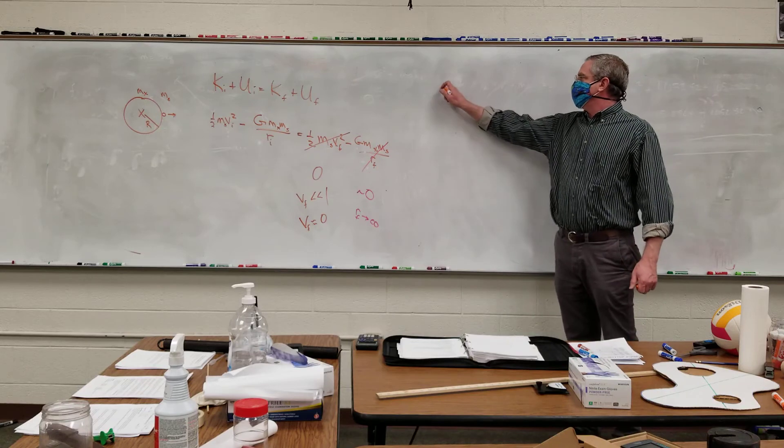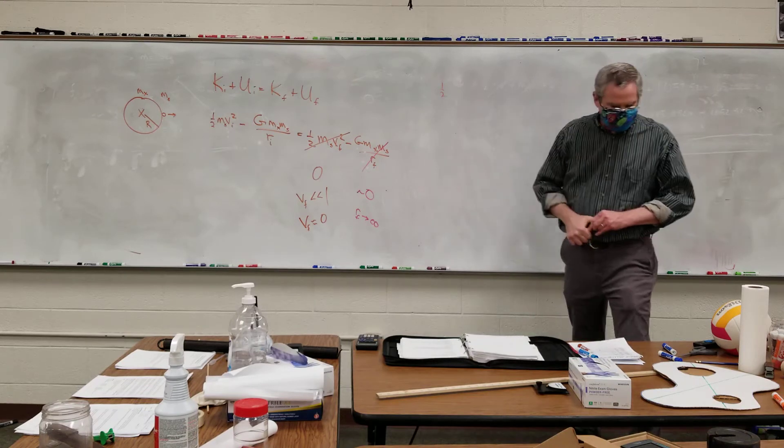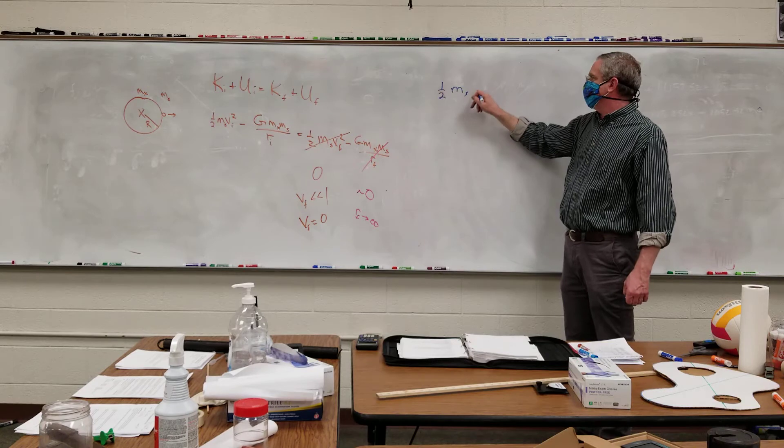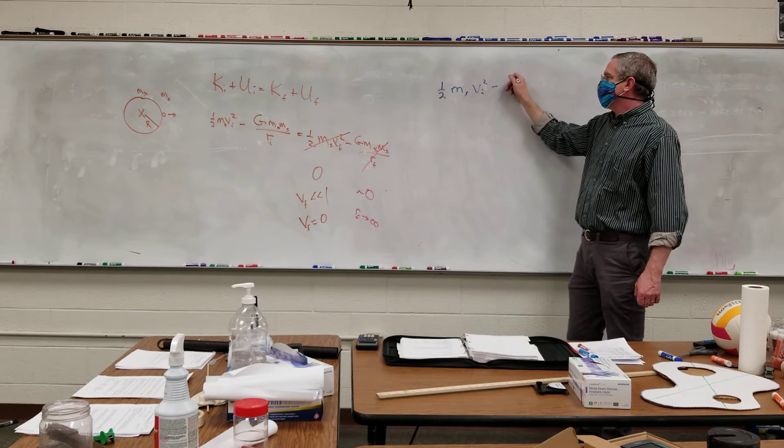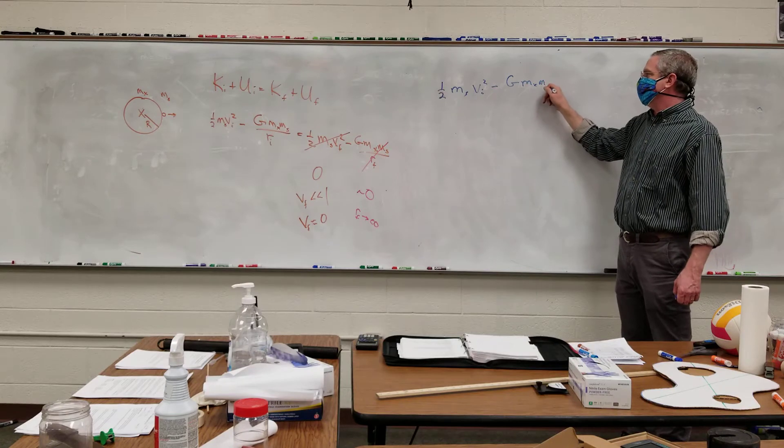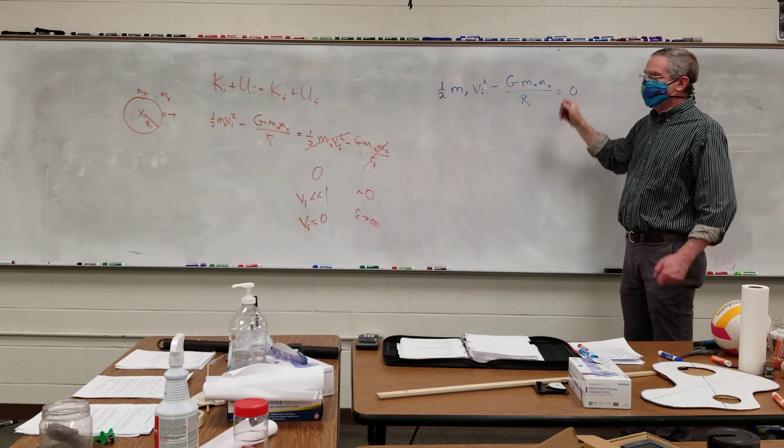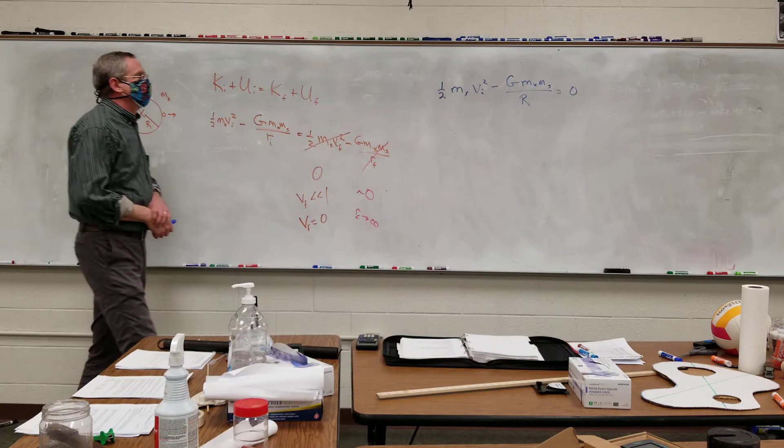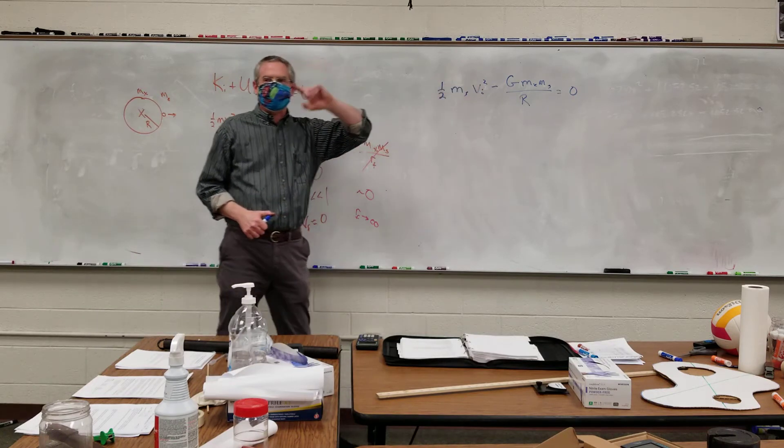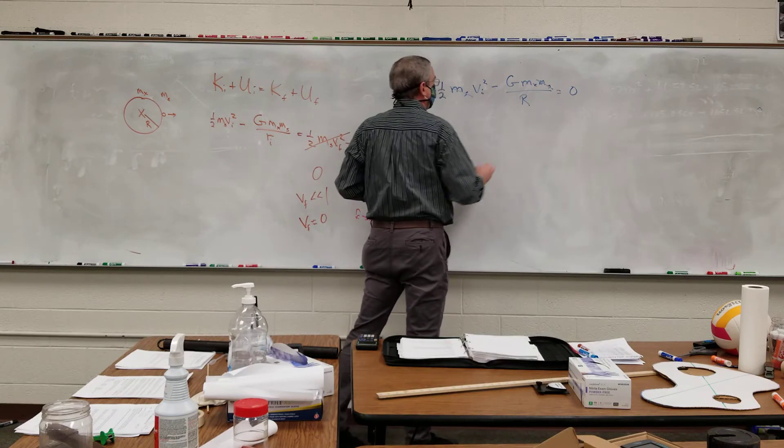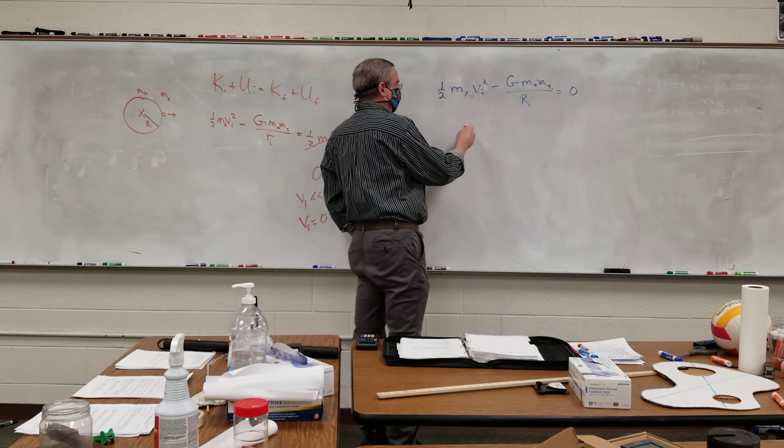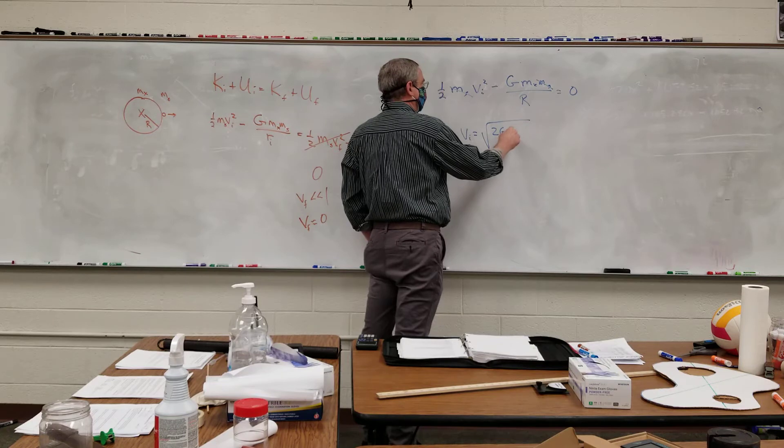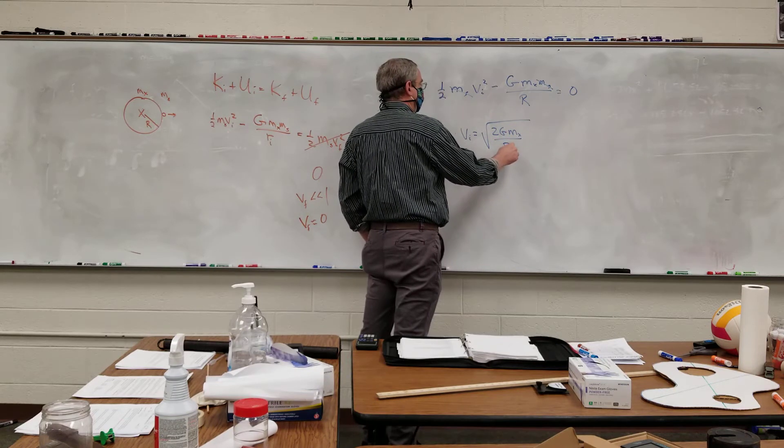So what I'm left with is one half times the mass of the satellite or stuff times its initial speed squared minus big G mass of the planet over mass of the stuff divided by radius of the planet equals zero. I have mass of the satellite is a common factor. And so it can go away. And so if I solve for vi, vi is equal to the square root of two big G mass of the planet over r.